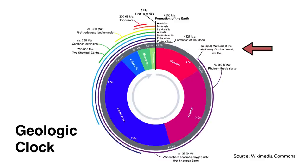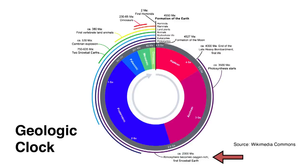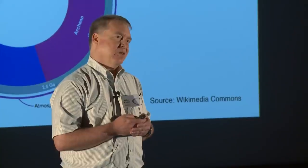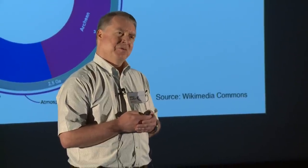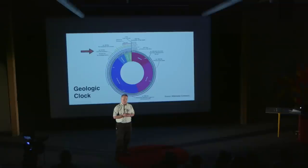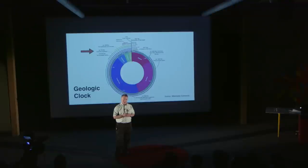At about 4 billion years ago, life first appeared on our planet — fairly early in our planet's history. At about 3.5 billion years ago, photosynthesis started. At 2.3 billion years ago, oxygen became rich in our atmosphere, enabling life forms like us to eventually come. Between 750 and 635 million years ago, the Earth froze over completely twice — this is called Snowball Earth. At 543 million years ago, there was a huge explosion of life called the Cambrian Explosion, representing the transition from single-cell life to multicellular life — a major milestone in the development of life on Earth.